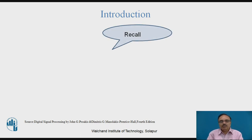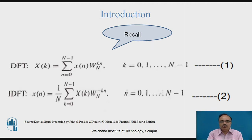Let us recall some of the concepts required to discuss the properties of discrete Fourier transform. The definition or equation of discrete Fourier transform can be written in terms of summation n equals 0 to N minus 1 of x(n) times W_N raised to kn, where W_N is the twiddle factor and k ranges from 0 to N minus 1. Here N is at least equal to the length of the sequence or greater.